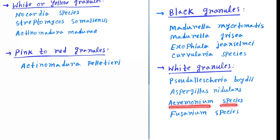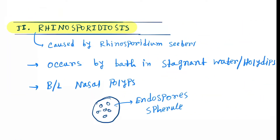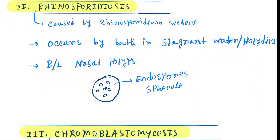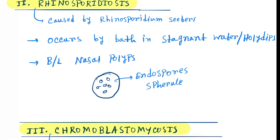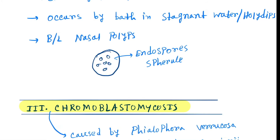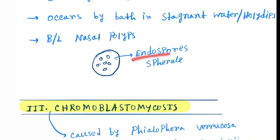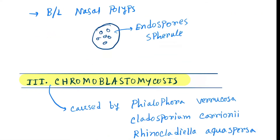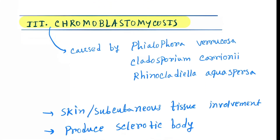Next is rhinosporidiosis, caused by Rhinosporidium seeberi. It occurs by bathing in stagnant water or wading in water. It presents as bilateral nasal polyps, where spherules are produced which are filled by endospores.